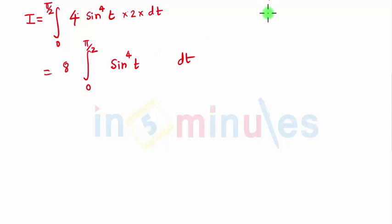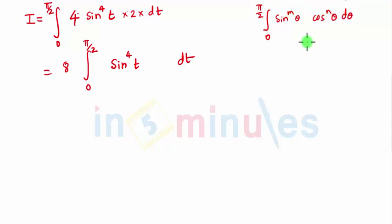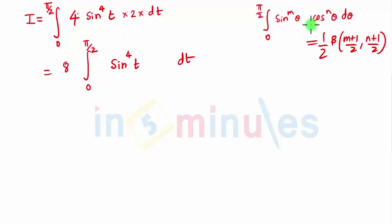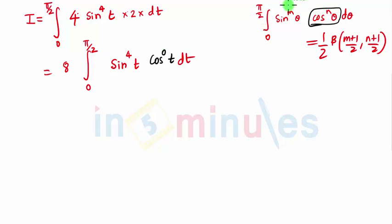Our basic equation for Beta is given by the integration of 0 to π/2 of sin θ raised to m into cos θ raised to n into dθ, which is nothing but half of Beta(m+1/2, n+1/2). Comparing these two equations, we do not have a cos term, so we can assume cos t raised to 0 which equals 1.